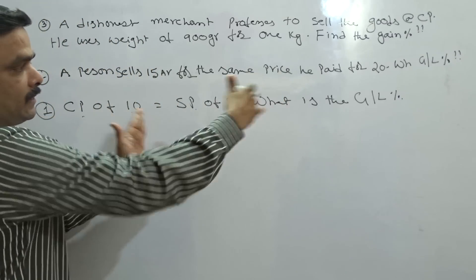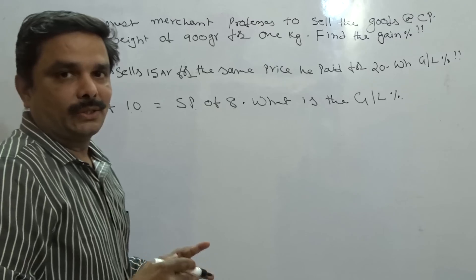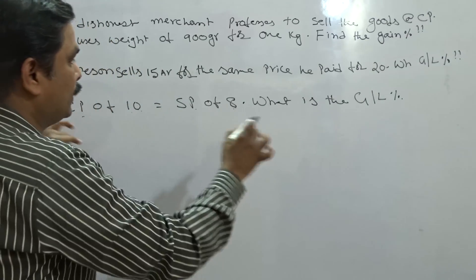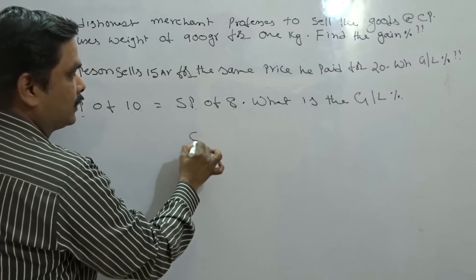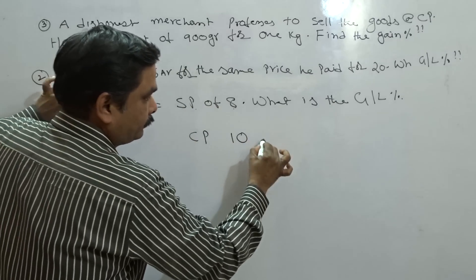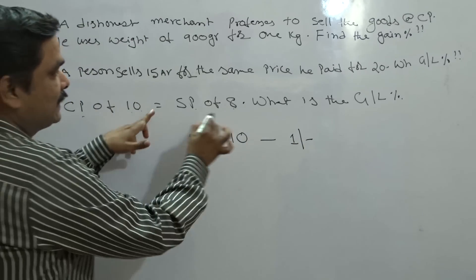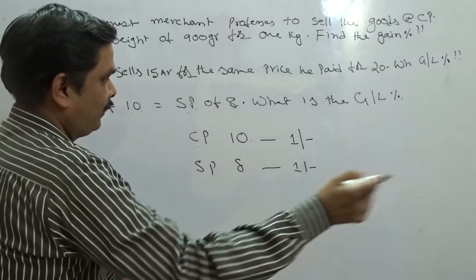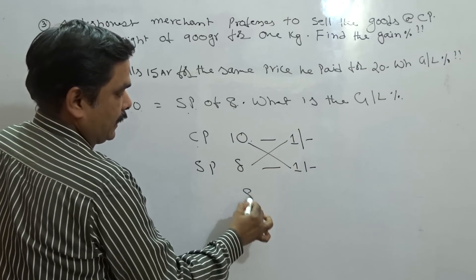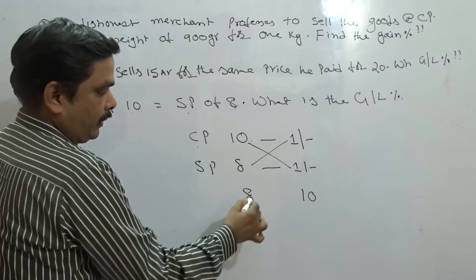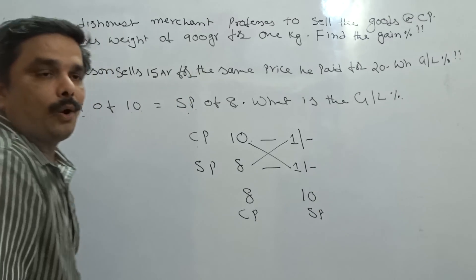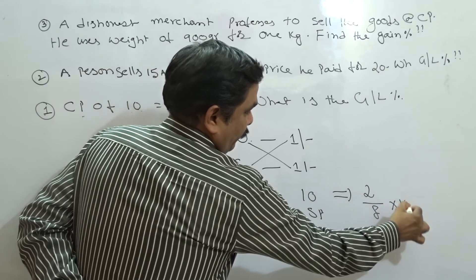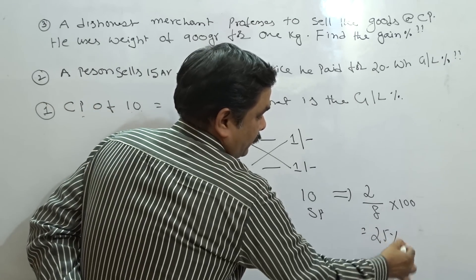Now how to go for the gain percentage? I explained this in the last session. We continue the same shortcut: I am taking cost price of 10 as 1 rupee. Since selling price of 8 is equal to cost price of 10, selling price of 8 must also be 1 rupee. Now we go for cross multiplication — 8 is CP, 10 is SP. Obviously there is a profit of 2 rupees, and profit upon cost price into 100 gives 25%.